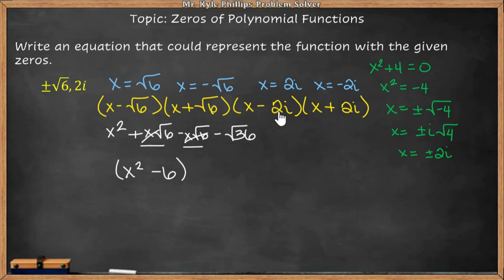If we foiled this and we distribute, our middle terms are going to go away, because we ran into the same thing we did over here. The first terms are exactly the same. The last terms are exactly the same. The only thing different are the signs in between. So we could go ahead and write this out. x times x is x squared. And negative 2i times positive 2i is negative 4i squared.